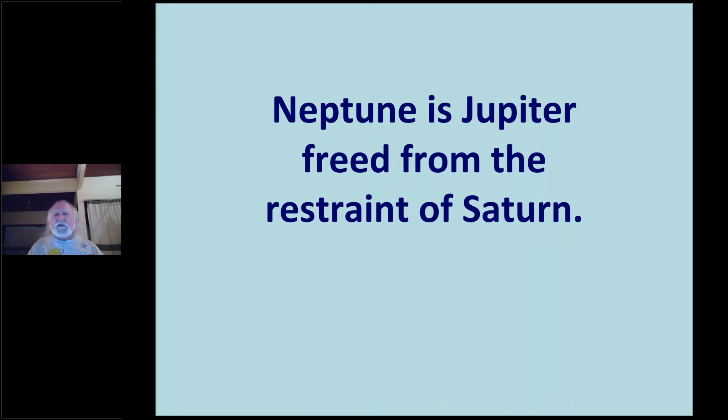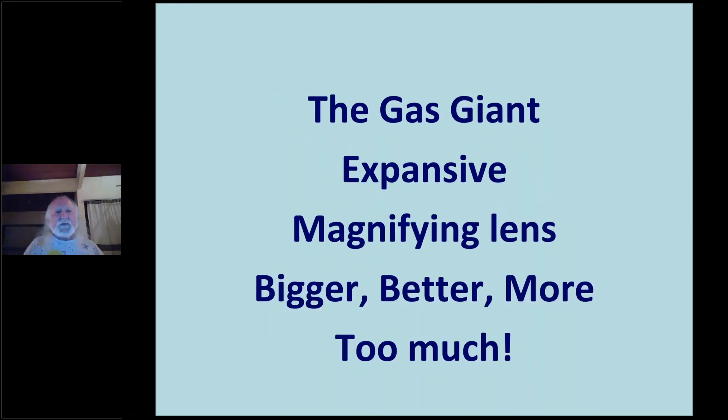Jupiter is expansive. Wherever Jupiter is in a chart, whether it's by birth or by transit, Jupiter makes things seem bigger, better, and more. And bigger and better and more sound really good. But bigger and better and more are not always good. Ask anyone who has been in a dance with cells that don't know how to respect Saturnian boundaries. And they keep expanding bigger and bigger and bigger because all Cancer is, from an astrological perspective, it's basically Jupiter not respecting Saturn.